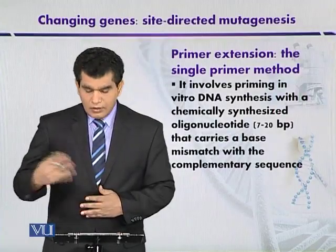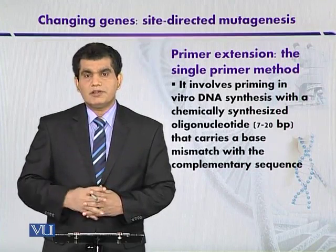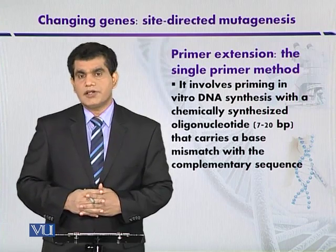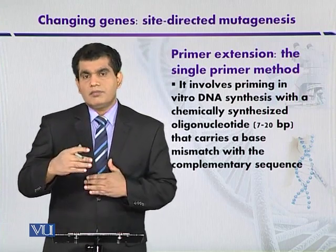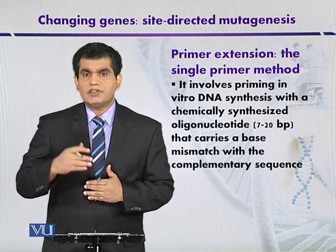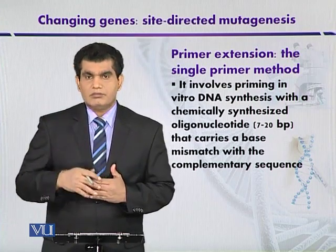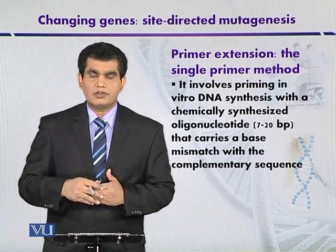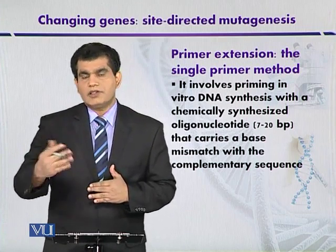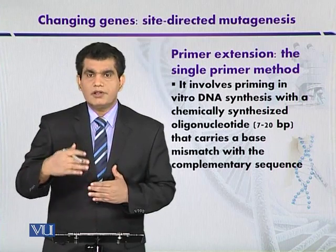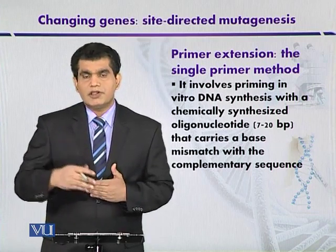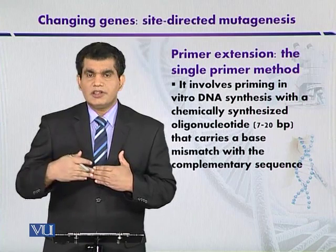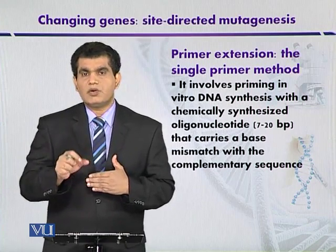Primer extension, or the single primer method, is another simple method for site-directed mutagenesis. Here we use a primer in which our choice is a mutation. This primer may be around 7 to 20 base pairs long. If this primer has one or two bases altered or mutated, it will not prevent annealing, because annealing still occurs due to the relatively short stretch of the primer.